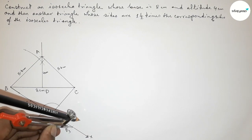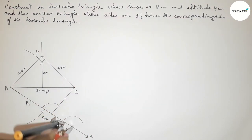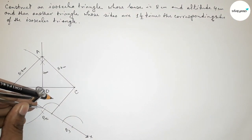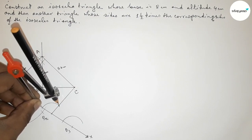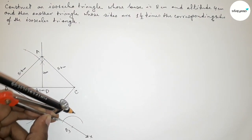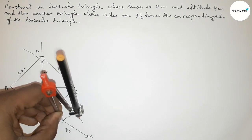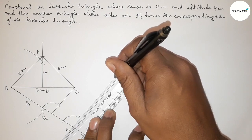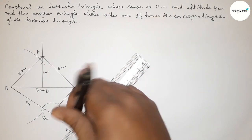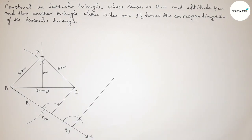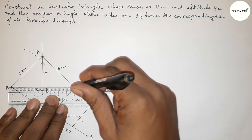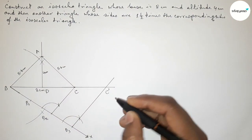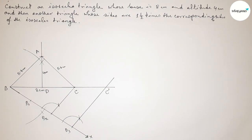Putting the compass on point B2 and drawing arcs above and below. Drawing a parallel line with the same length and drawing a similar arc. Taking the distance between the two intersection points with the compass, putting the compass on B3, and cutting here. Drawing two equal angles at point B3. Joining this line — the line B2C and this line are parallel with equal angles.